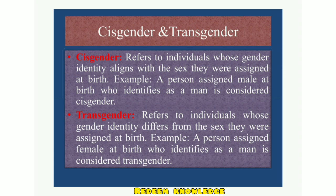Ab transgender kya hai? It refers to individuals whose gender identity differs from the sex they were assigned at birth. Jab koi insaan biological characteristics ki buniyaad par male ya female declare kiya gaya ho, lekin bade hokar woh apne aap ko bilkul alag identify kare — usi insaan ko hum transgender kehte hain. Zaroori nahin hai ki ek insaan ki sex ki buniyaad par uska gender determine kiya ja sake.